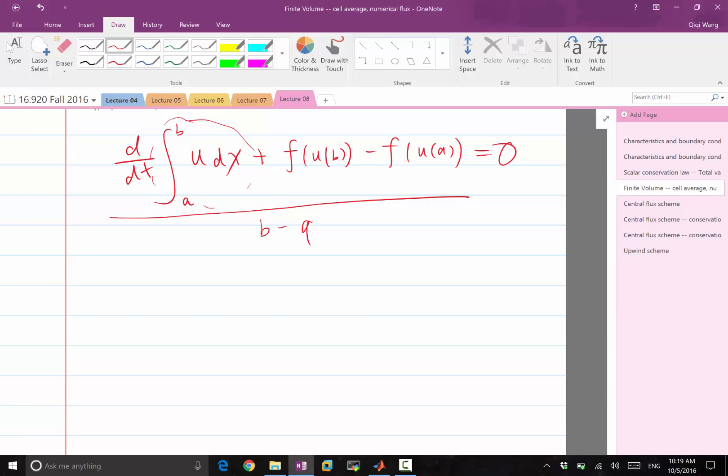So d/dt of u bar over b and a, plus f on the right side of the domain minus f left equal to 0.